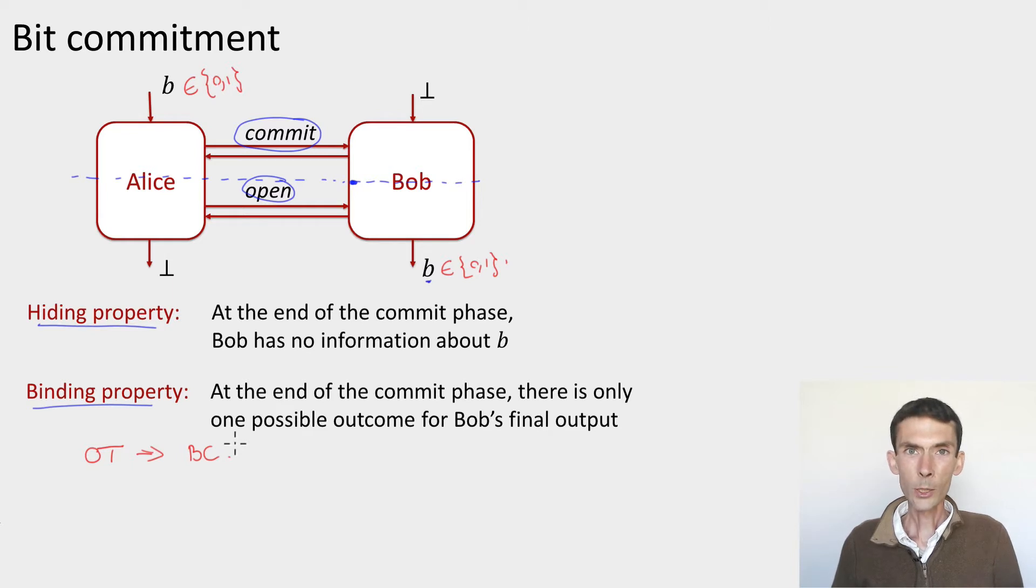But why would we care about bit commitment? Well, it turns out as you saw also a couple of videos ago, that bit commitment can be used to implement OT in the quantum case, meaning that if you only allow yourself classical protocols, and if you know how to implement bit commitment, that's not sufficient to implement oblivious transfer. So it's not enough to implement any function. Classically, bit commitment is strictly weaker than general multi-party computation. But quantumly, as we saw, if you can implement bit commitment, then you can implement everything.